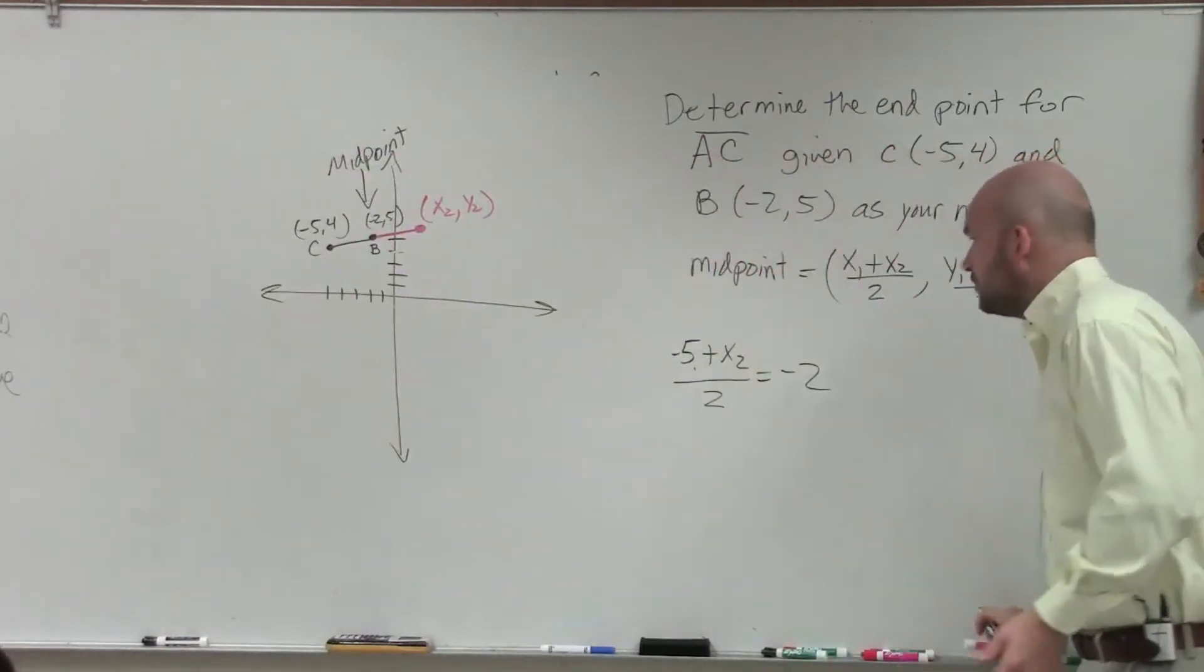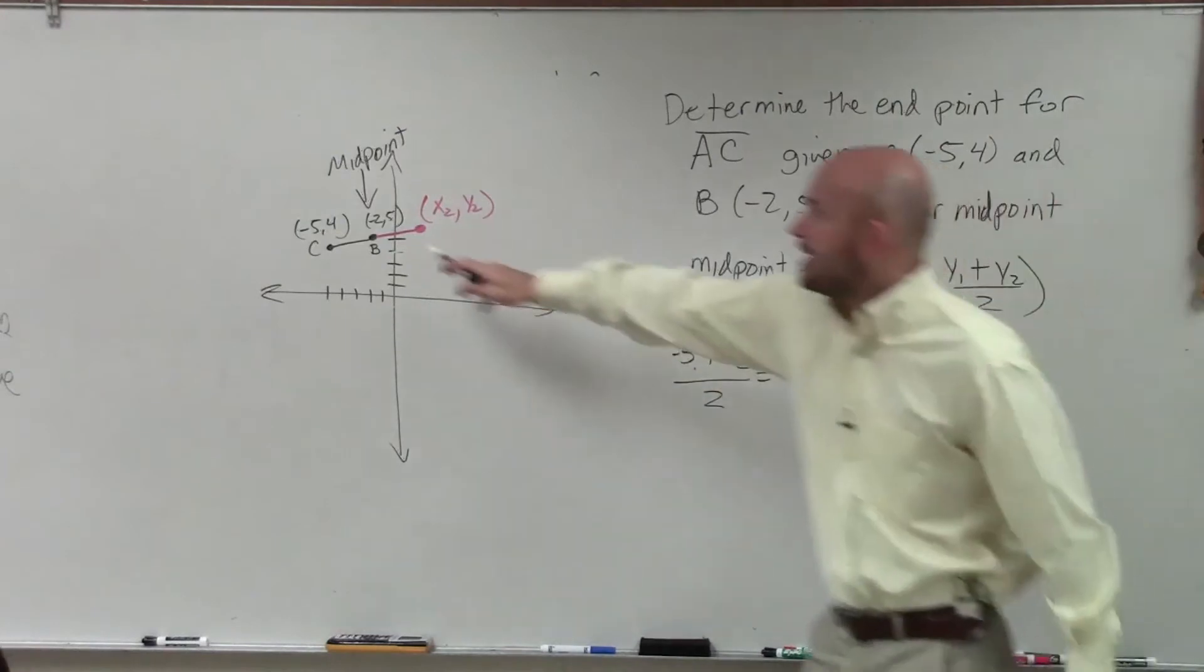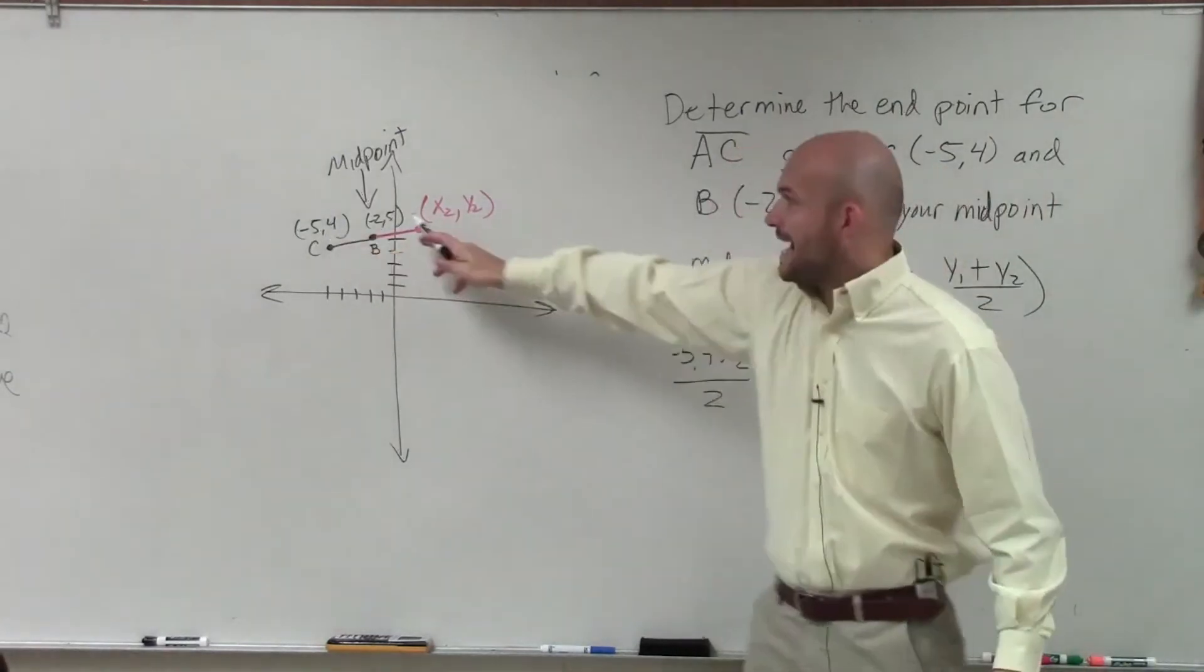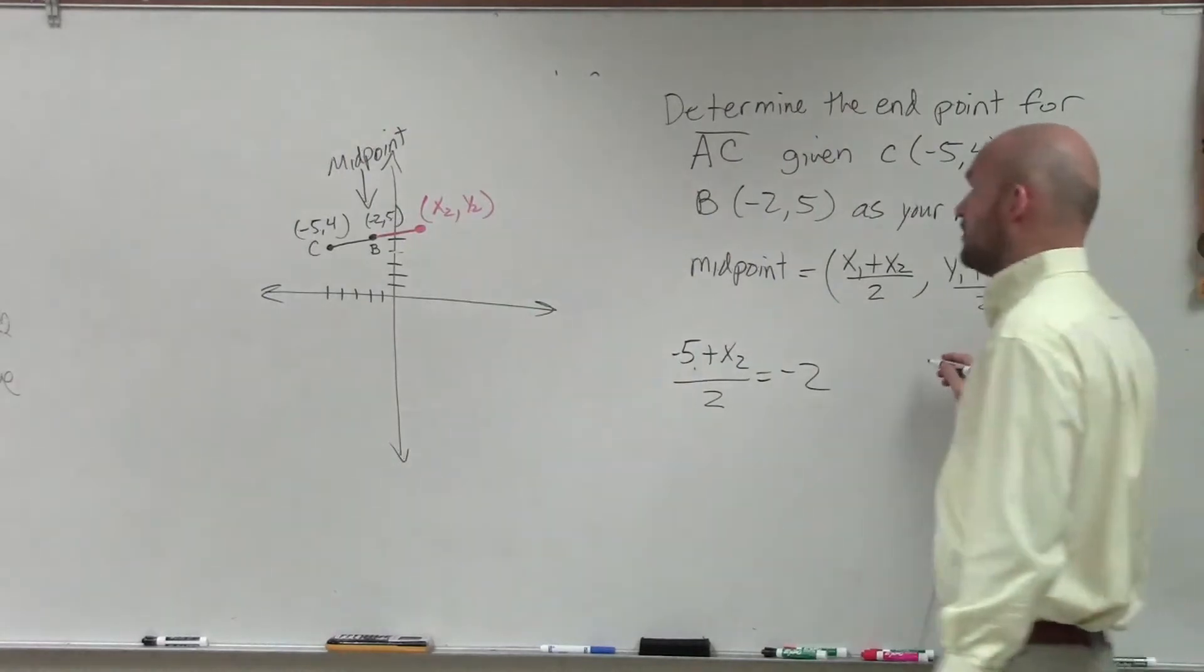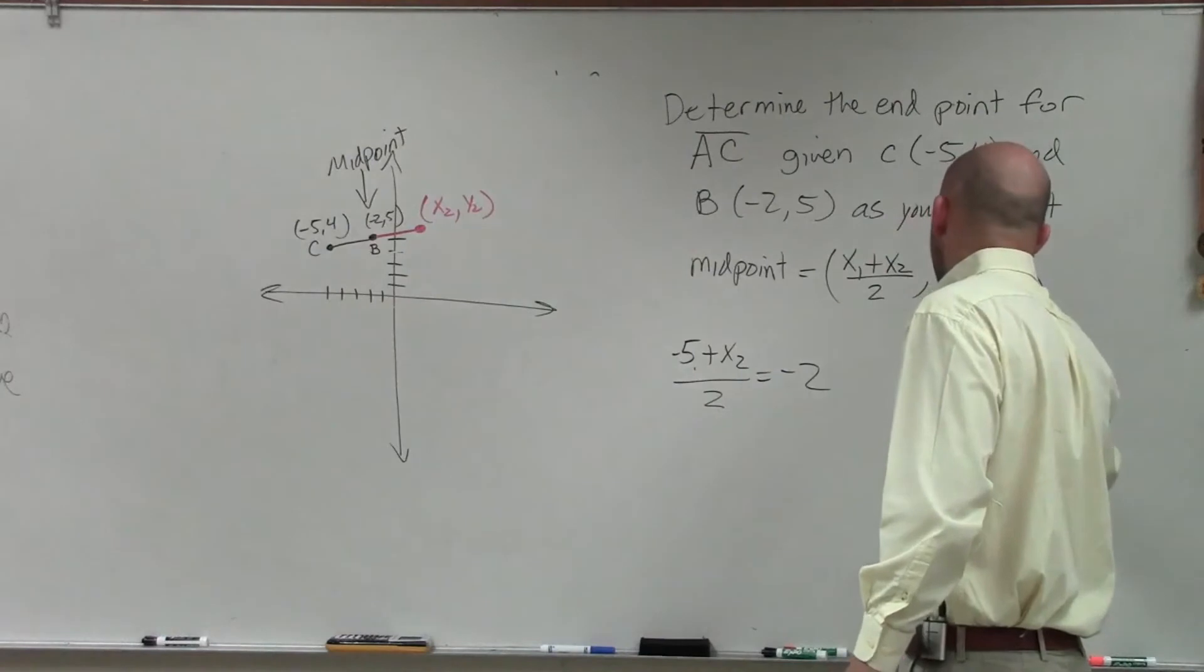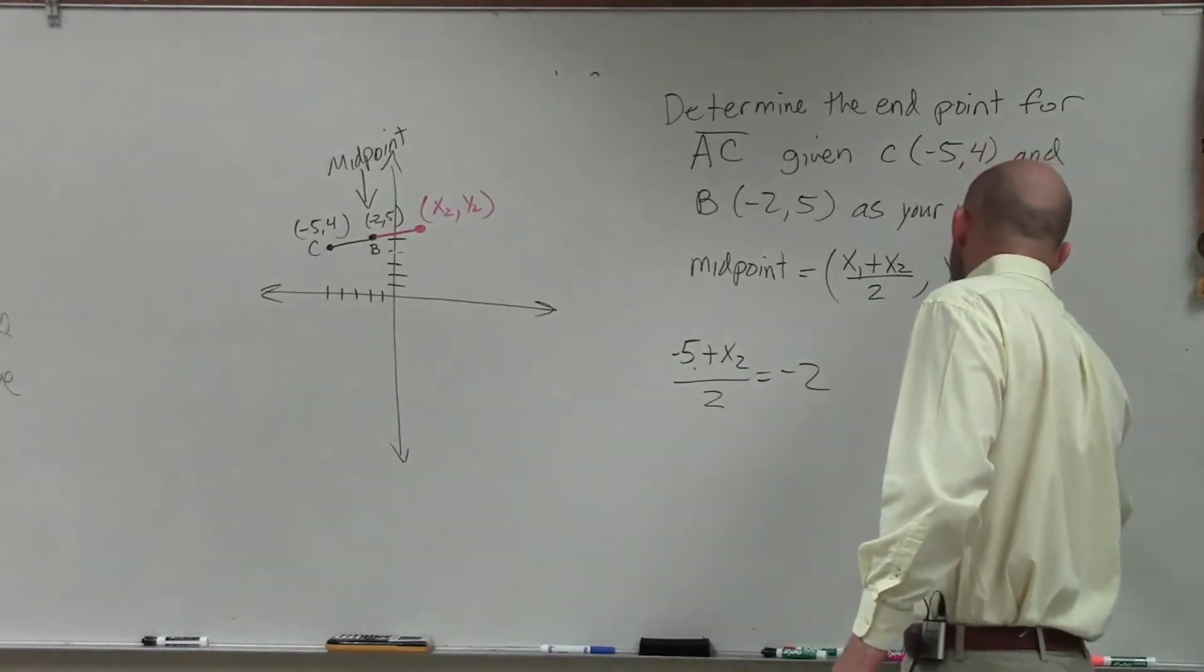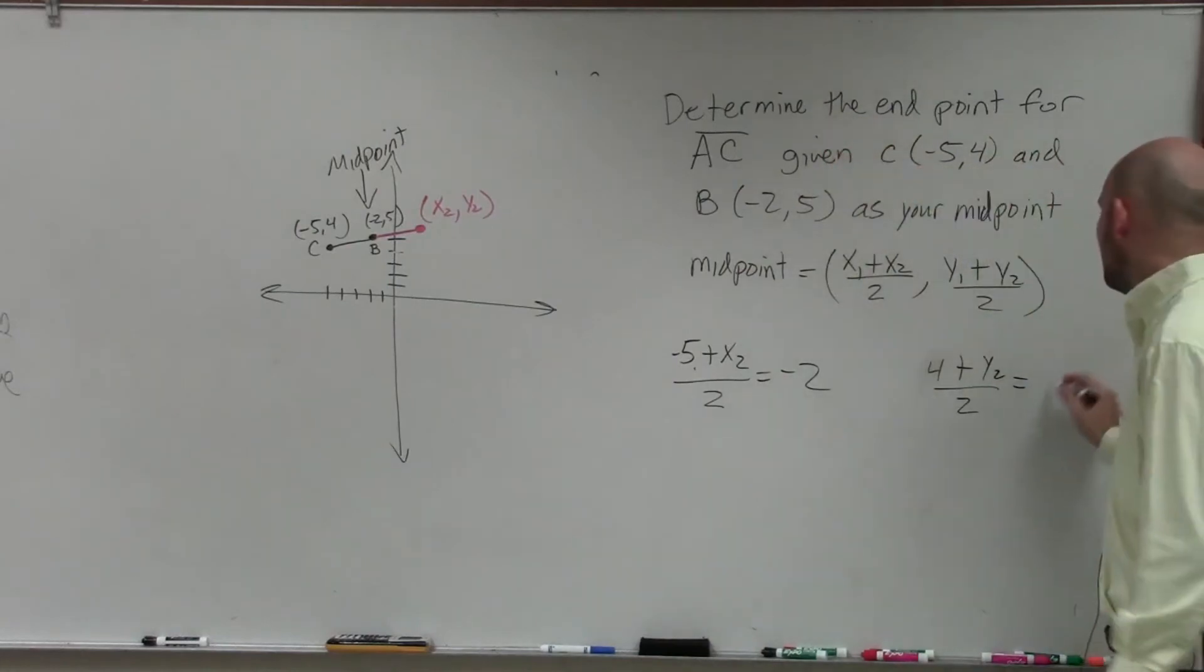So then I go to, well, what about the y? I know what the 1 y-coordinate was. The 1 y-coordinate was 4, and I know the answer was 5. But I don't know what y2 was. So what I'll write is 4 plus y2 divided by 2 equals, what was the y-coordinate of my midpoint? 5.